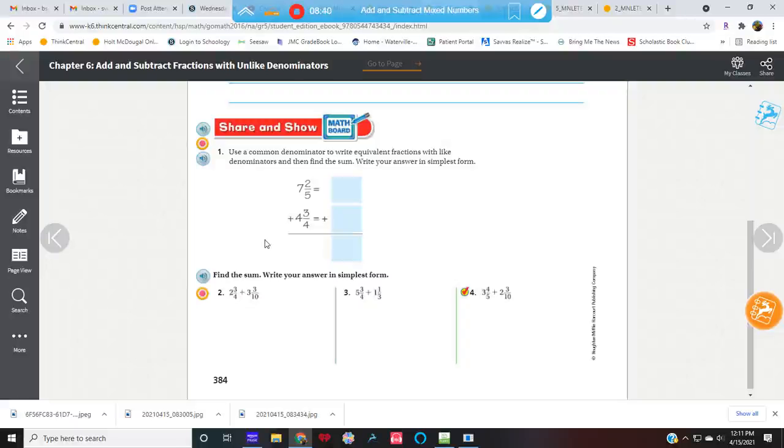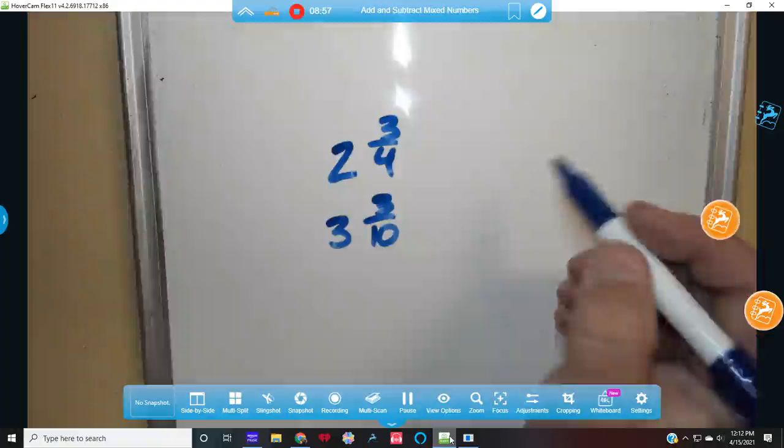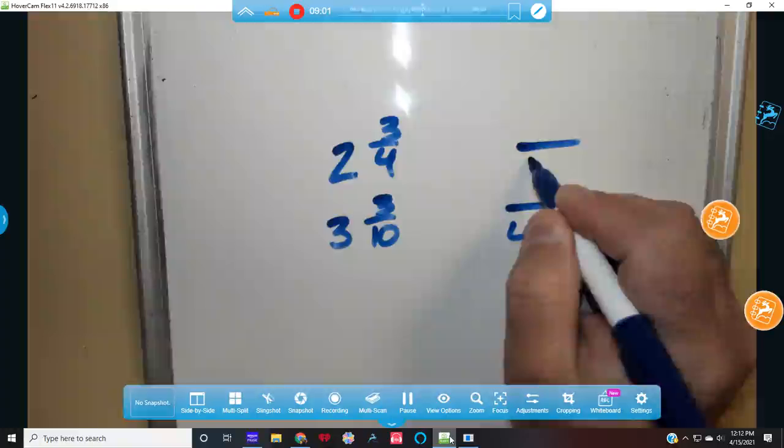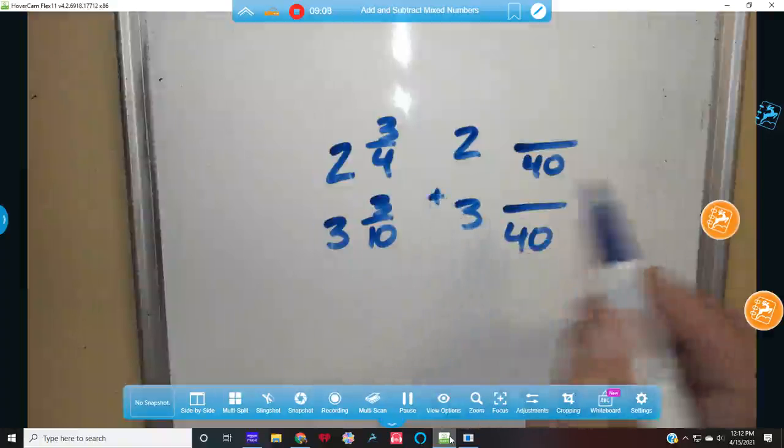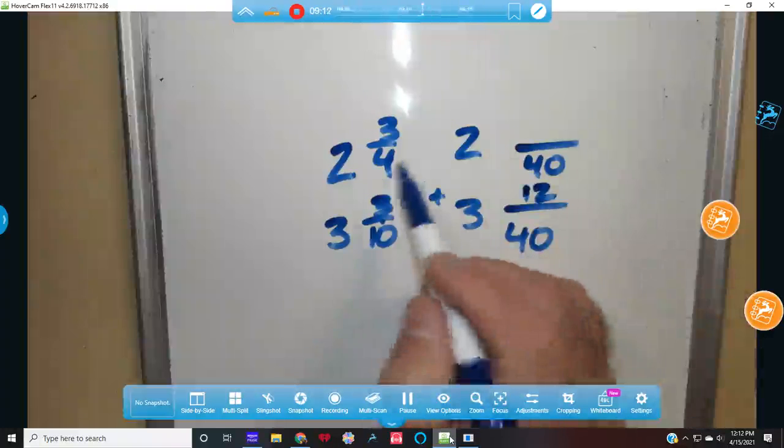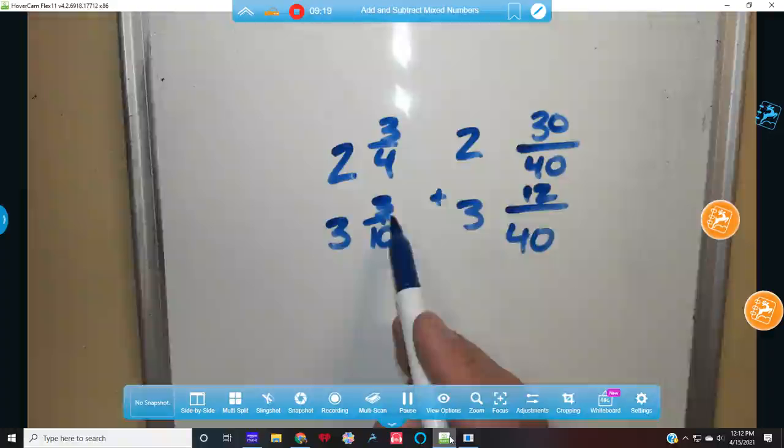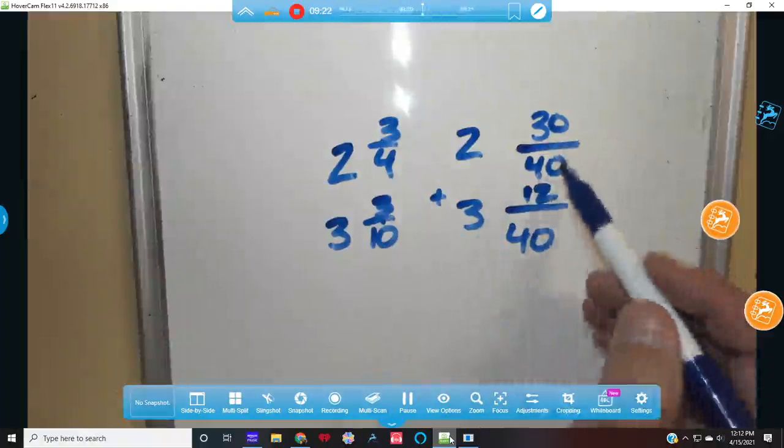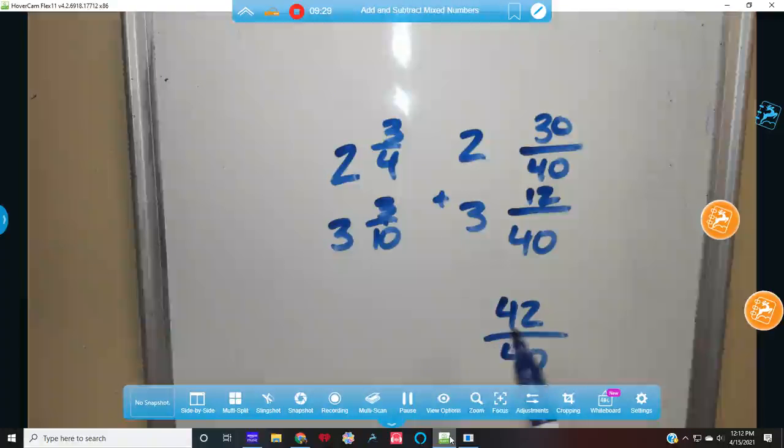So I have 2 and 3 fourths and I have 3 and 3 tenths. 2 and 3 fourths, 3 and 4 tenths. So I'm going to just do it the easy way, I'm going to start with 40. Even though I know I could do a different number, I'm going to start with 40. So I'm going to put my 2 here, my 3 here, my plus here. How did I get 40 and multiply it by 10? How did I get to 40 here and multiply it by 10? 10 times 4, 3 times 4.